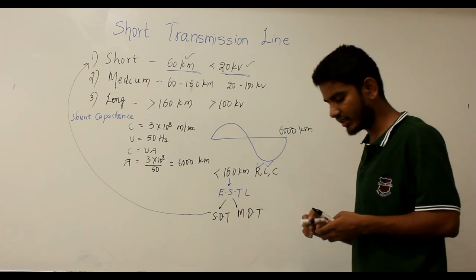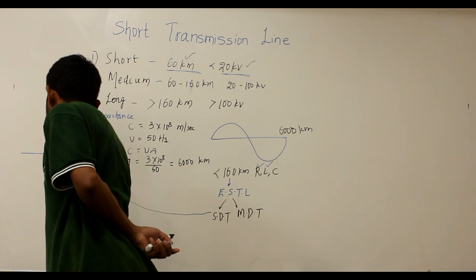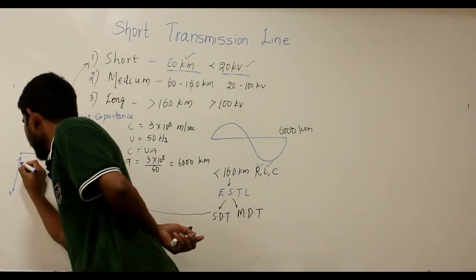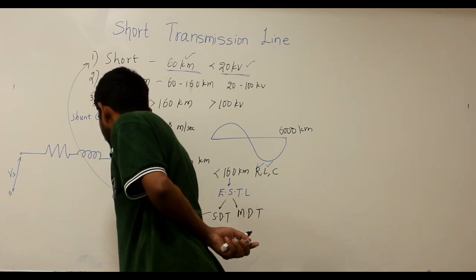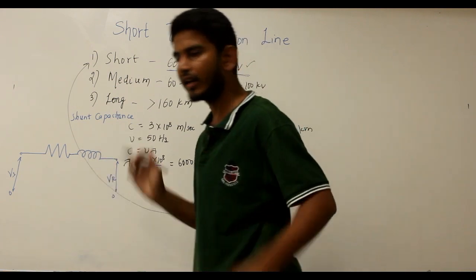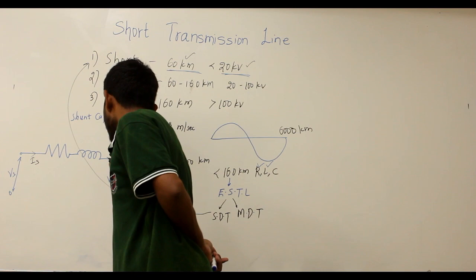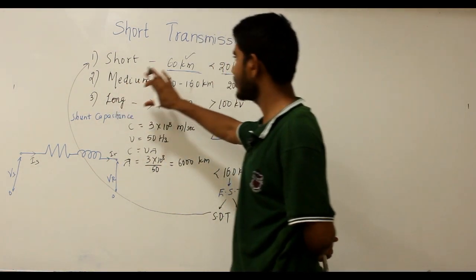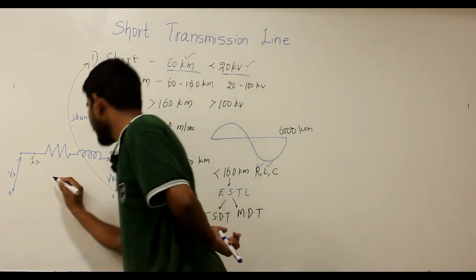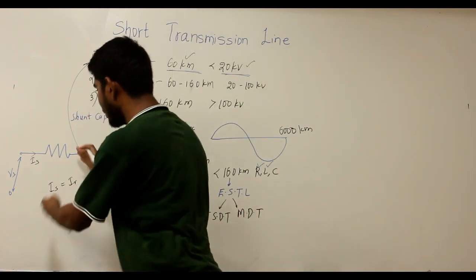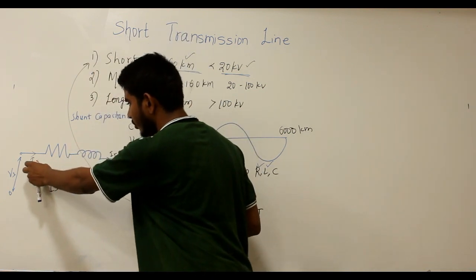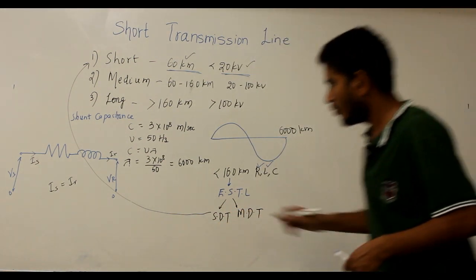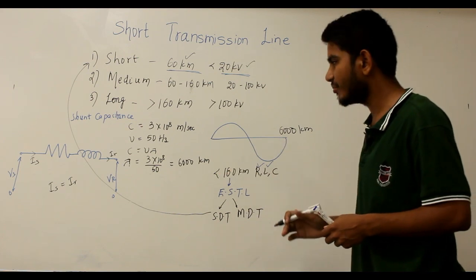Let us see the equivalent circuit diagram of the short transmission line. It consists of resistance R and inductance L in series. The sending end voltage is VS and the receiving end voltage is VR. The sending end current is IS and the receiving end current is IR. Since shunt capacitance is neglected, there is no shunt branch, and therefore IS equals IR.